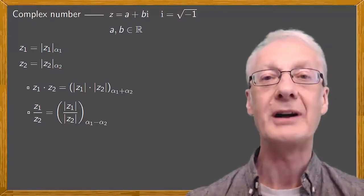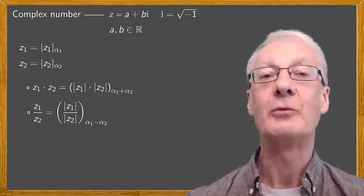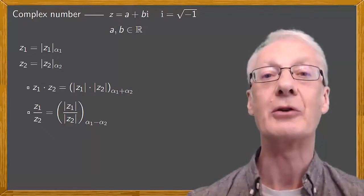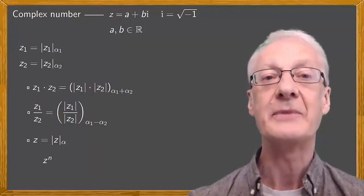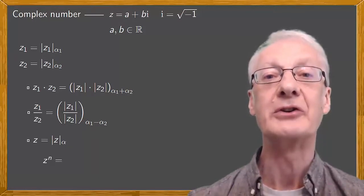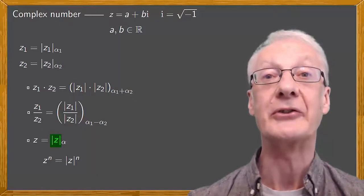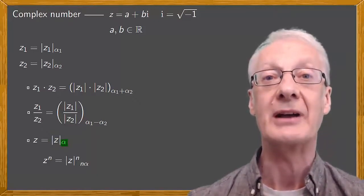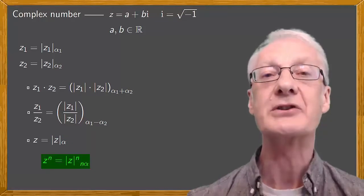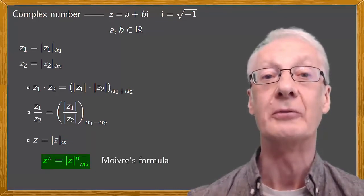Also repeatedly applying the formula for the product, we obtain an expression for the power of a complex number in polar form. z to the n is the complex number with a modulus equal to the modulus of z to the n, and an argument that's just n times alpha. This expression is known as Demoivre's formula.